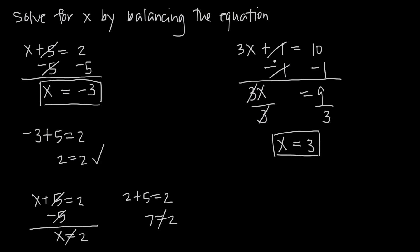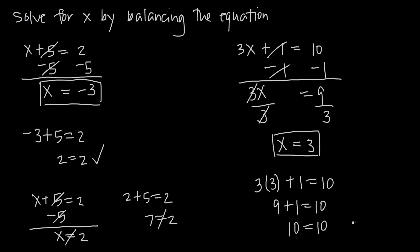If we double check ourselves by plugging it back into our original equation, we get 3 times 3 — plugging in x equals 3 — plus 1 is equal to 10. Solving this, we get 9 plus 1 is equal to 10, or just 10 is equal to 10. Because that checks out, we know we got the correct solution for x. So just remember: always keep your equations balanced. Whatever you do to one side, you have to do to the other.